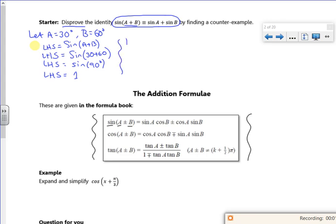So that's done. Right, so let's look at the right hand side now. So the right hand side is sine A plus sine B. So that will be sine of 30 plus sine of 60. Now if you put that in your calculator, sine of 30 is a half but sine of 60 is root 3 over 2.